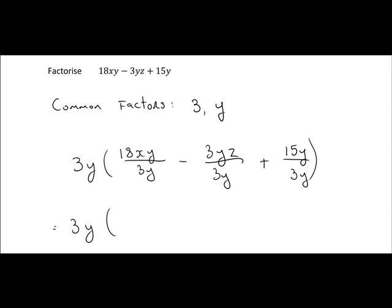So that would be equal to 3y multiplied by 18xy divided by 3y. We've figured that out next. So 18 divided by 3 is 6. For xy, y divided by y goes once, so we're just left with the x.